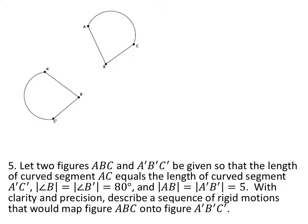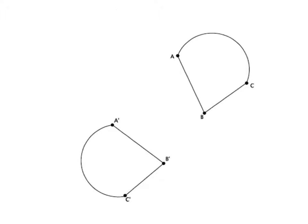Let two figures ABC and A prime, B prime, C prime be given so the lengths, the corresponding lengths are the same, and the corresponding angles are the same. With clarity and precision, describe a sequence of rigid motions that would map figure ABC on the figure A prime, B prime, C prime. So the first thing I'm going to do is trace that shape ABC on some kind of scratch piece of paper.